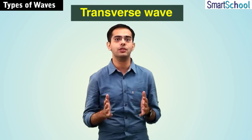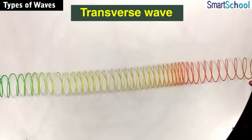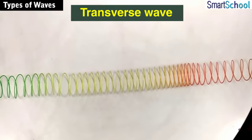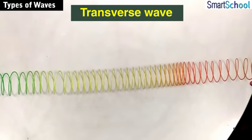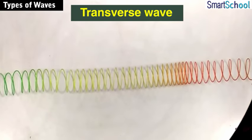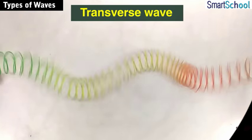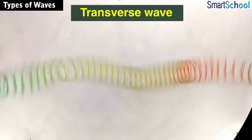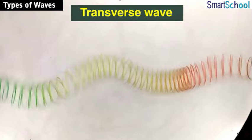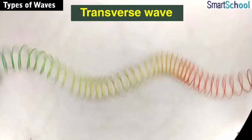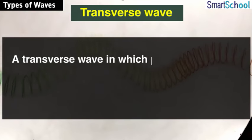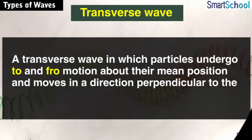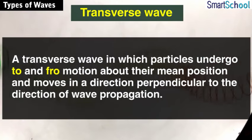Let's do a simple activity to demonstrate how a transverse wave looks. We take a slinky, place it on the table, fix one end, and leave the other end free. When I hold the free end and whip it, the slinky appears to move like a snake, showing a wavy appearance. This vibrating slinky represents a transverse wave, in which the particles undergo to-and-fro motion about their mean position and move in a direction perpendicular to the direction of wave propagation.